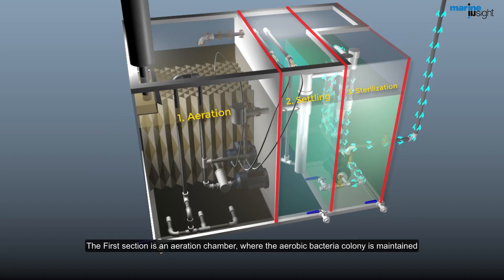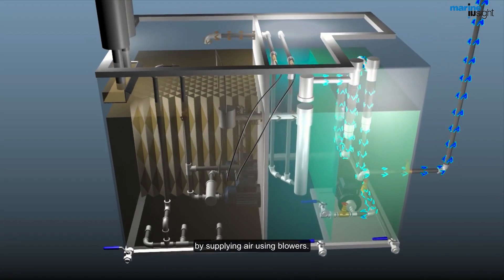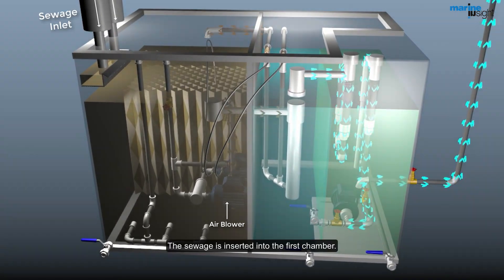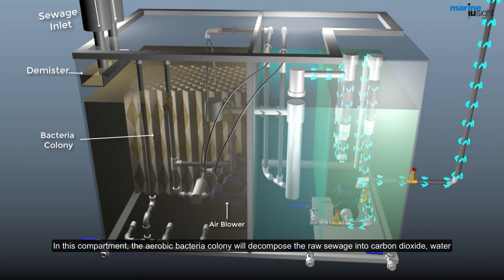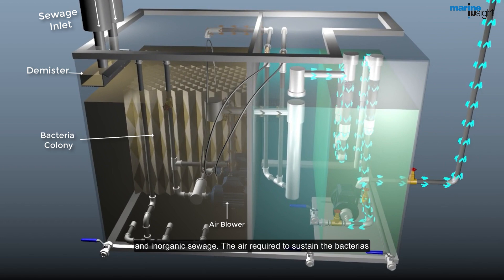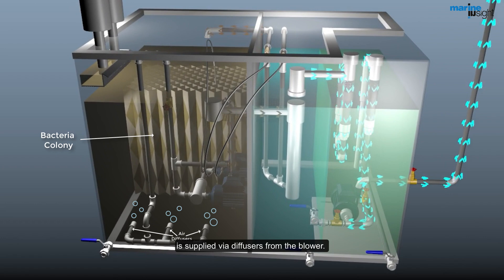The first section is an aeration chamber, where the aerobic bacteria colony is maintained by supplying air using blowers. The sewage is inserted into the first chamber. In this compartment, the aerobic bacteria colony will decompose the raw sewage into carbon dioxide, water, and inorganic sewage. The air required to sustain the bacteria is supplied via diffusers from the blower.